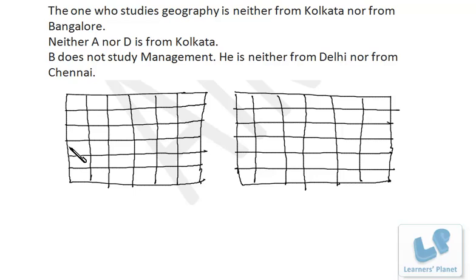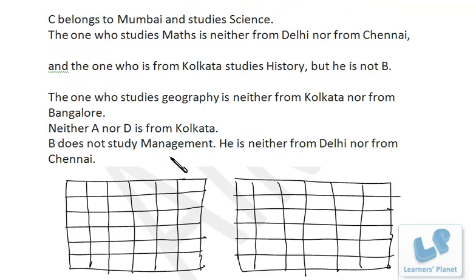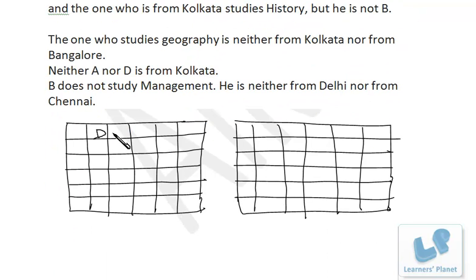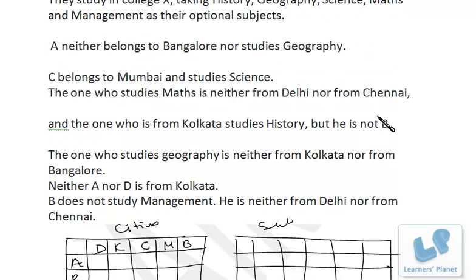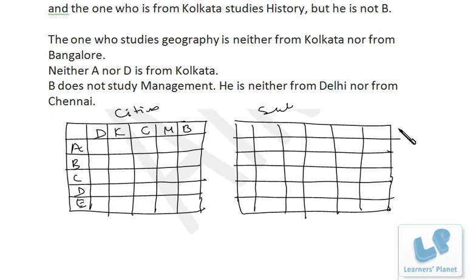The cities are Delhi, Chennai, Kolkata, Mumbai, and Bangalore — labeled a, b, c, d, e. The subjects are History, Geography, Math, Science, and Management — also labeled a, b, c, d, e respectively.